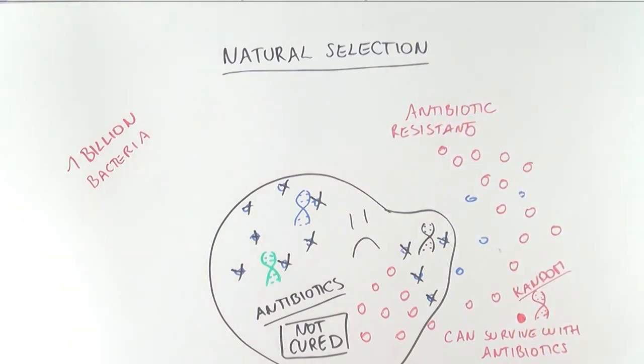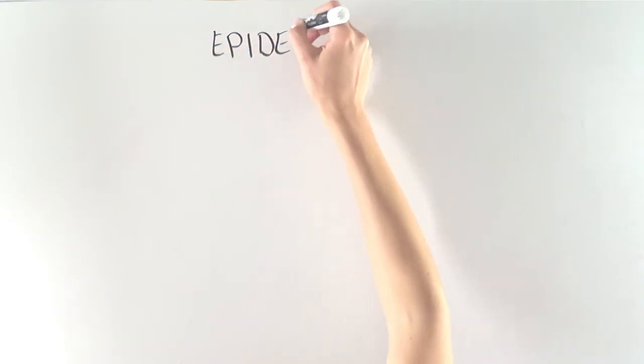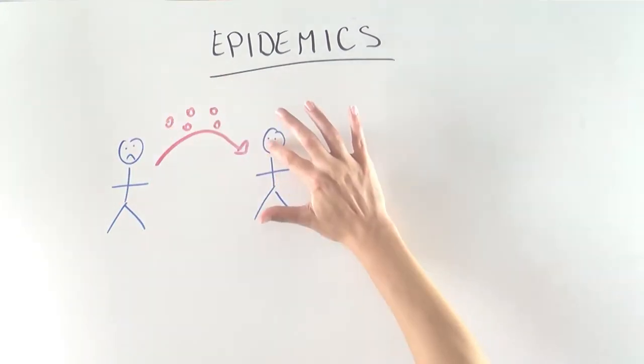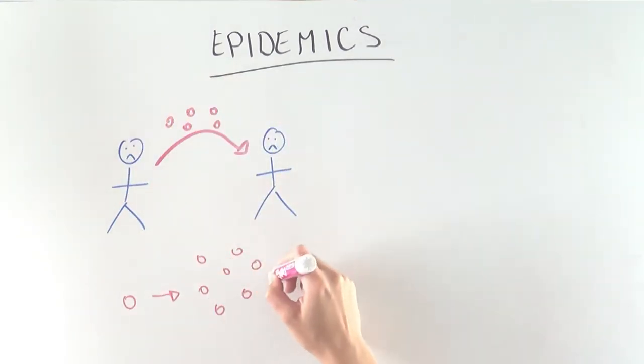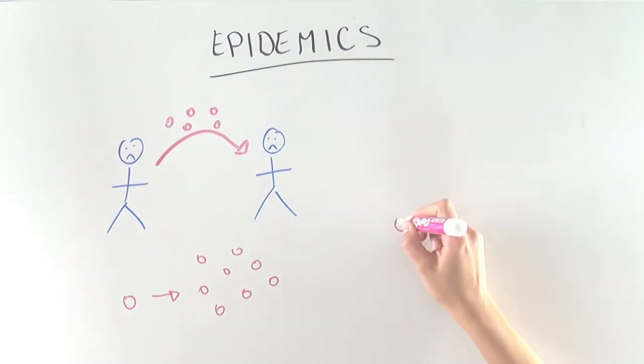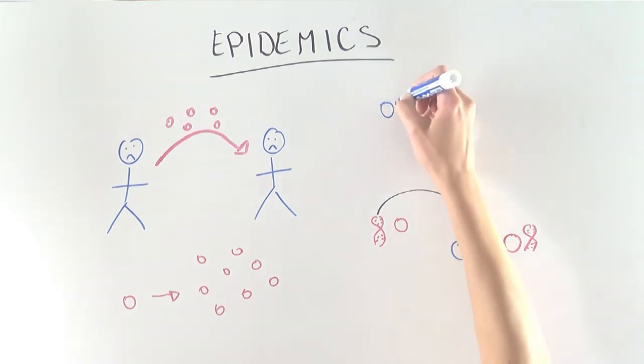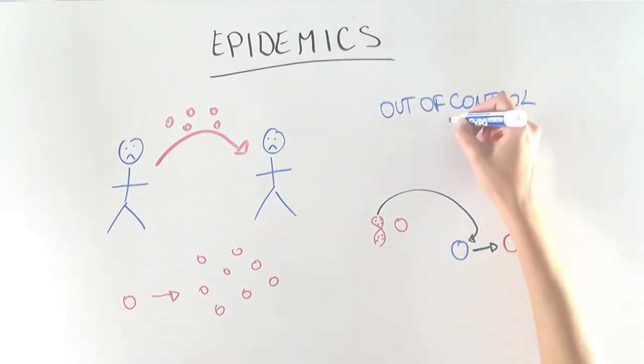But worse yet, these antibiotic resistant bacteria could then cause epidemics by spreading from person to person, by dividing and making more resistant bacteria, but also by giving their special DNA to other bacteria and making those bacteria resistant as well. The cycle could get out of control, with no antibiotics to stop it.